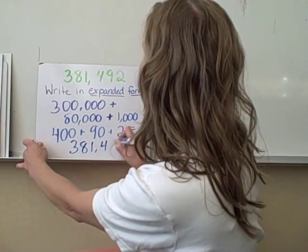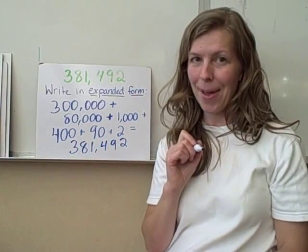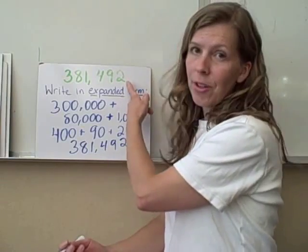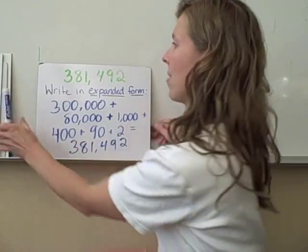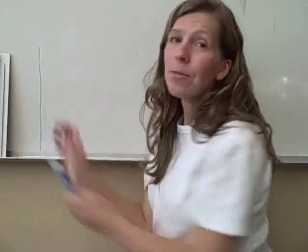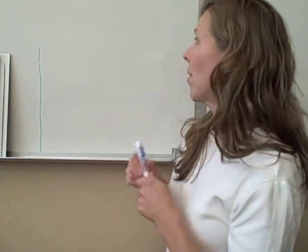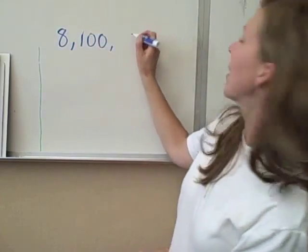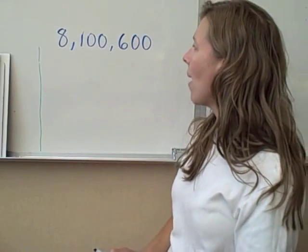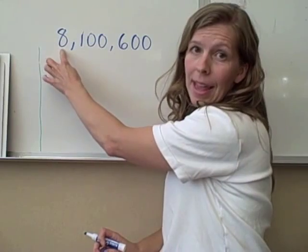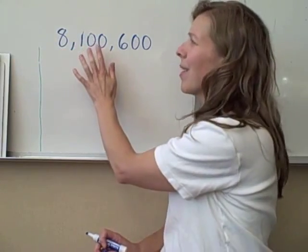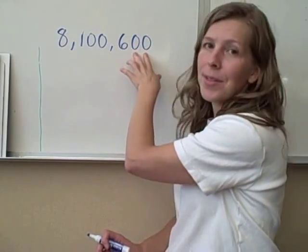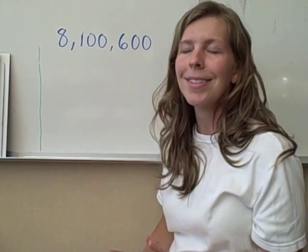One tricky area where some kids have gotten confused is when there are zeros in your original number. We're still writing in expanded form, but now let's take another number: 8,100,600. We see the 8 in the millions place, the 1 in the hundred-thousands place, but we only have zeros in the ten-thousands place, the thousands place, and also zeros in the tens and ones places.